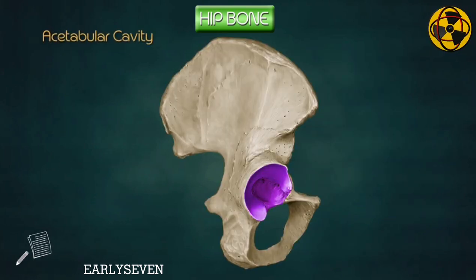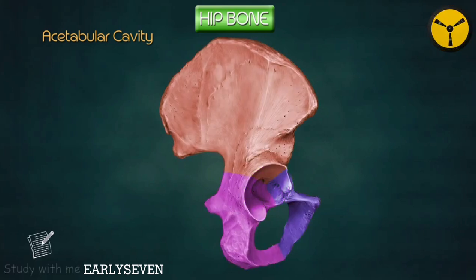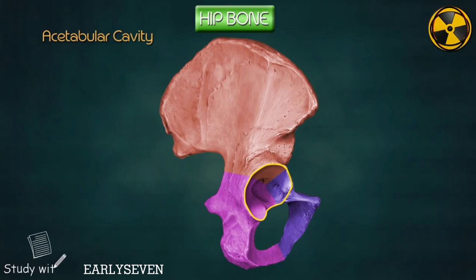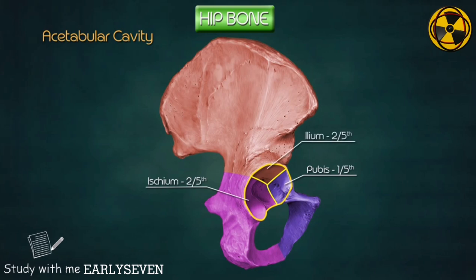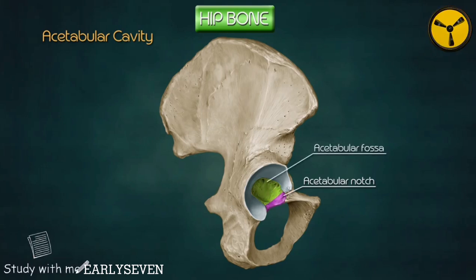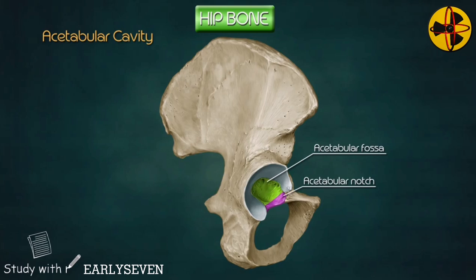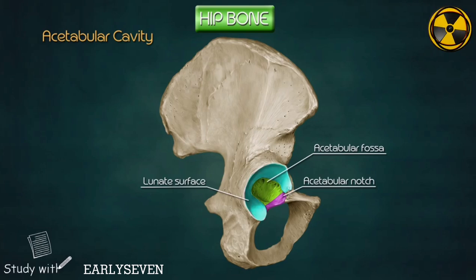The acetabular cavity. It is a deep hollow in the hip bone which faces laterally, downwards, and forwards, and articulates with the head of the femur. All three parts of the hip bone contribute to its formation: pubis — upper and anterior one-fifth; ischium — lower and posterior two-fifths; ilium — the rest of the cavity. The acetabular notch is a gap in the inferior part of the acetabular margin. The acetabular fossa is a rough non-articular area in the center of the cavity covered with a pad of fat. The lunate surface is a horseshoe-shaped area which articulates with the head of the femur.